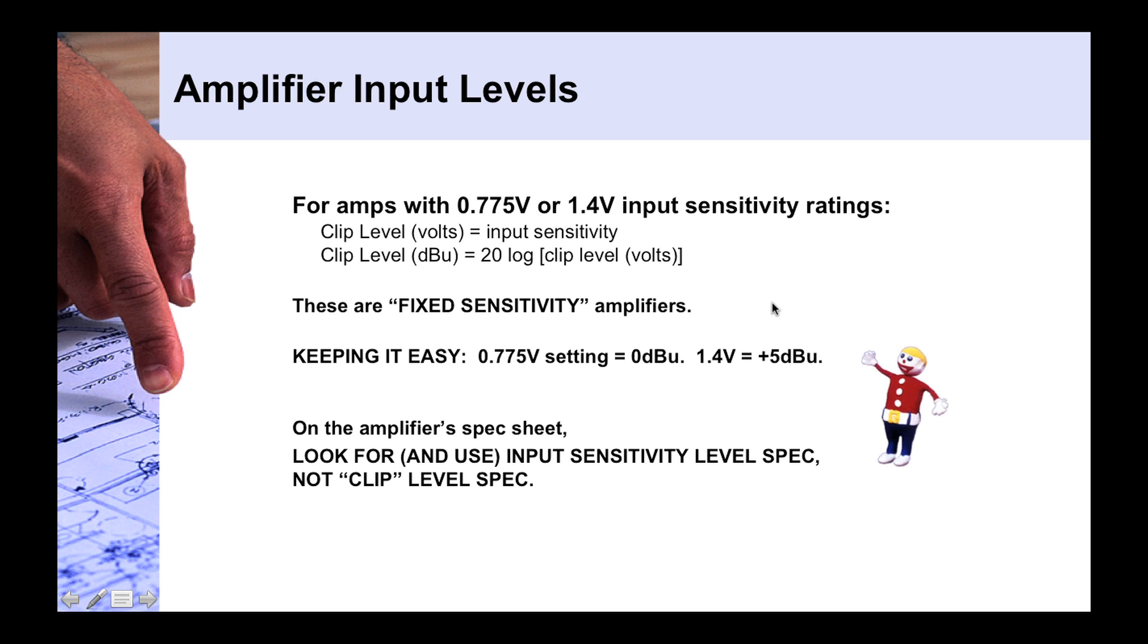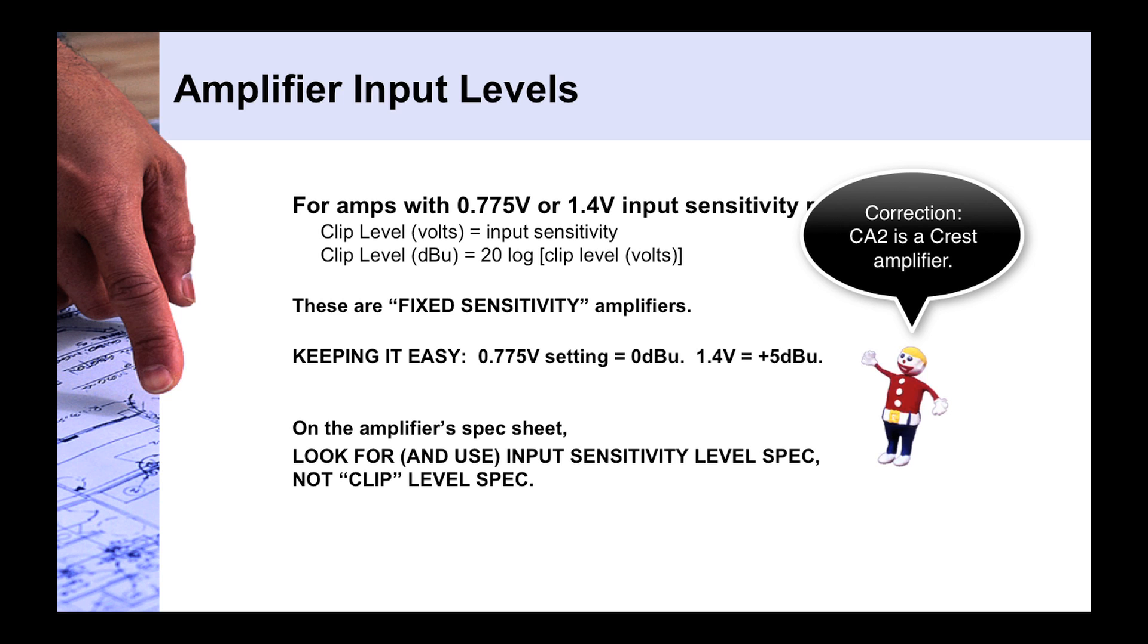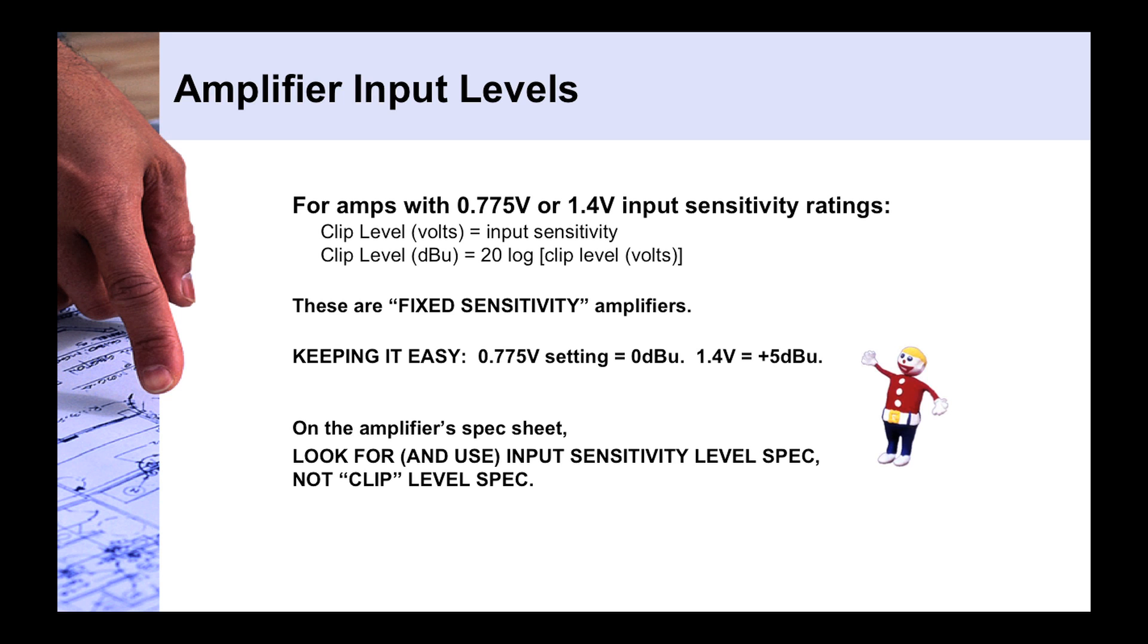The first thing we're going to look at are fixed sensitivity amplifiers. Now what these are, let's say you have a line of Crown amps or QSC amps, like a QSC's CA2 series or PowerLite Plus series, whatever brand and make and model of an amplifier is. So across that entire range of, say, QSC PowerLite Plus or PowerLite Pro amplifiers, across that range you might have a 200 watt amp, an 800 watt amp, a 600 watt amp, a 1200 watt amp. However, regardless of how powerful that amplifier is, the sensitivity is going to be the same. So these are fixed sensitivity amplifiers.